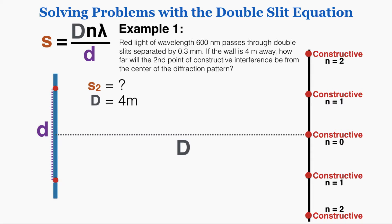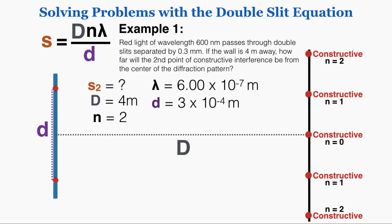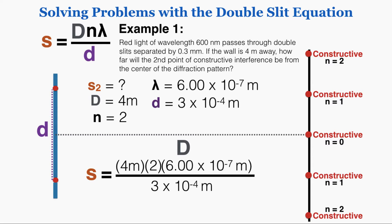D, the distance from the wall to the diffraction grating, is 4 meters. N is 2 because we're finding the second point of constructive interference. The wavelength is 6 times 10 to the negative 7th meters — nano means 10 to the negative 9th, so converting 600 nanometers gives that value. And d is 3 times 10 to the negative 4th meters. I'm converting everything into meters in scientific notation, and now I have all my variables to plug into the equation.